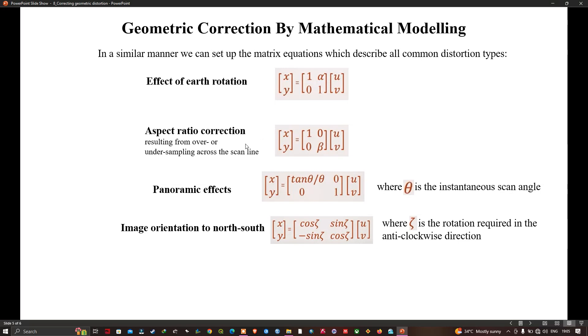Similarly, the panoramic effects can be represented in this equation where theta is the instantaneous scan angle. And for image orientation from north to south, which can be represented in this matrix equation where phi represents the rotation required in the anticlockwise direction.